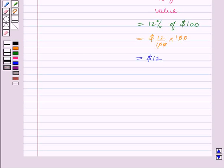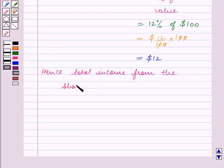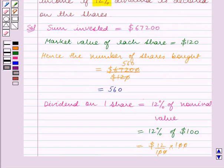Now we have to find the income from the shares. Hence total income from the shares is equal to total number of shares bought which is 560, multiplied by the dividend on each share which is $12.